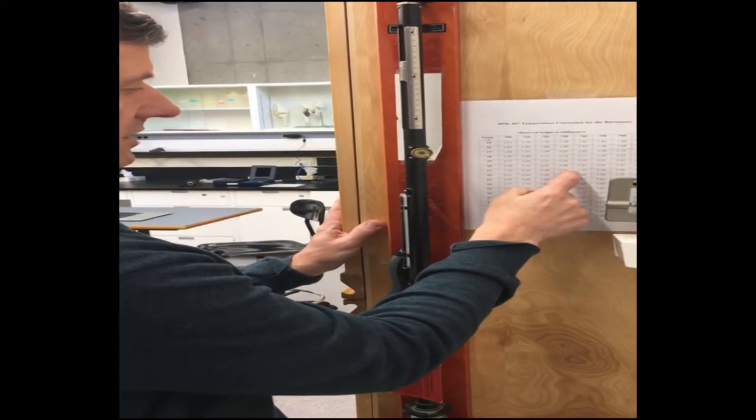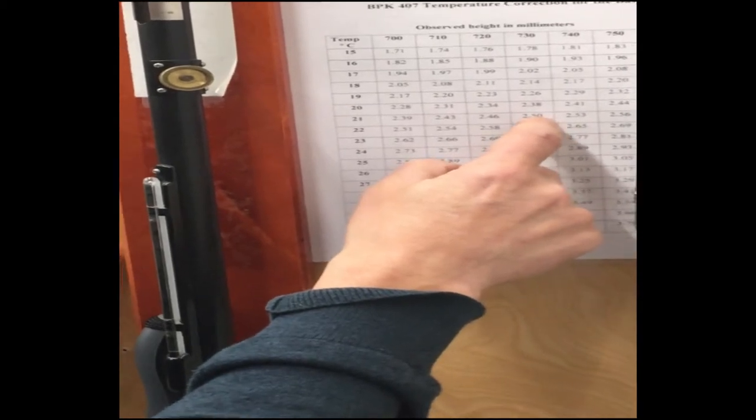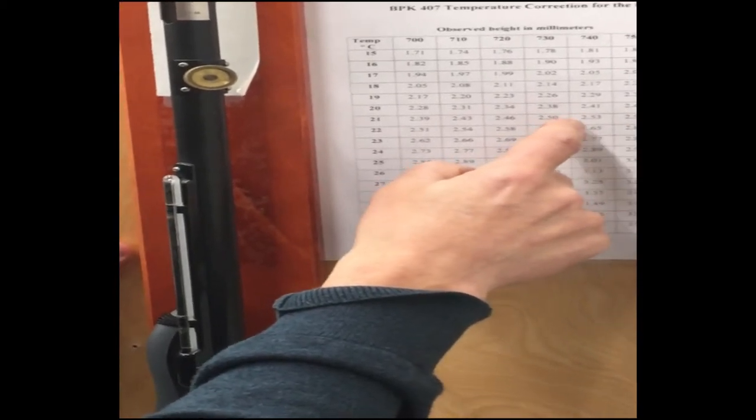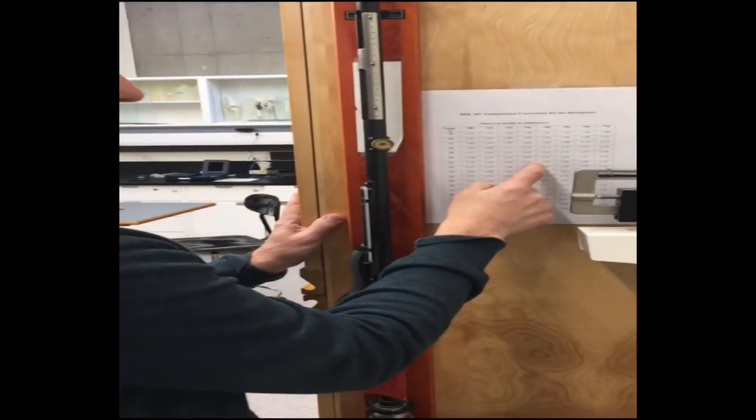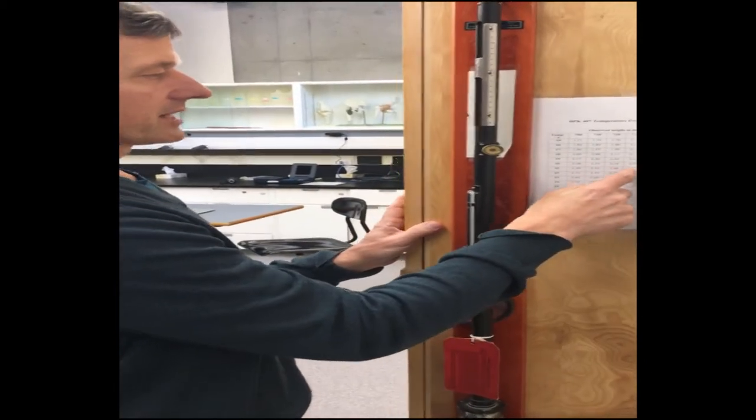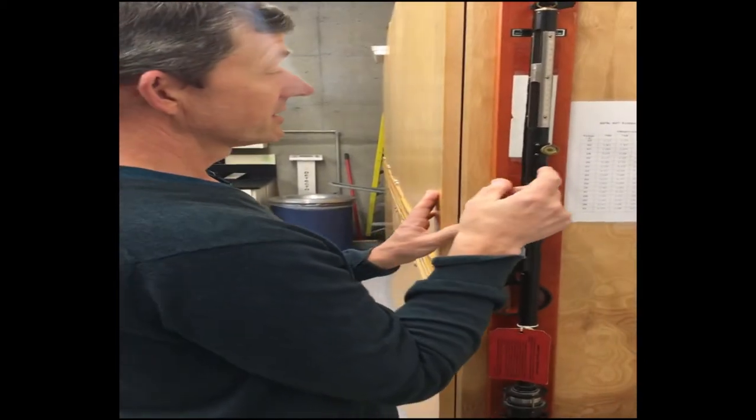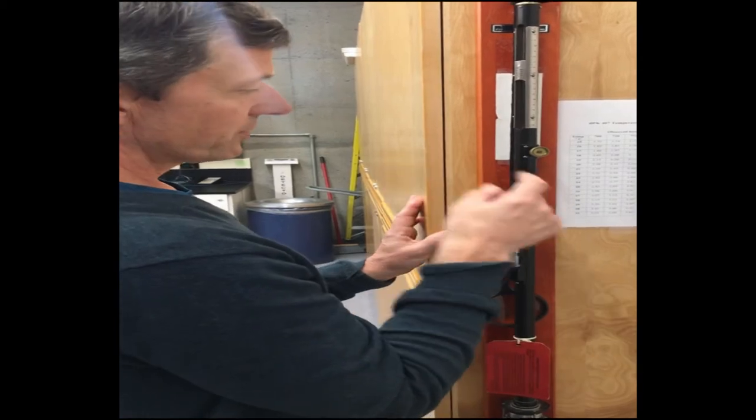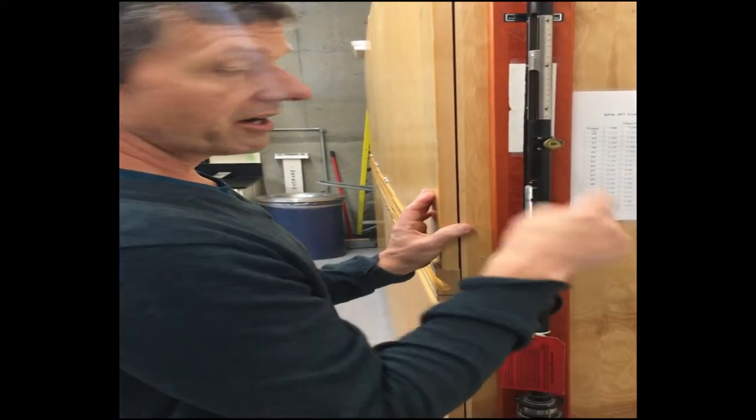We know it's 737 millimeters mercury. If I look at my correction factor, it's probably about 2.52, so I'll say that my correction factor is 2.5. I then take my initial value of 737.3, subtract 2.5 from that, and that is the corrected barometric pressure.